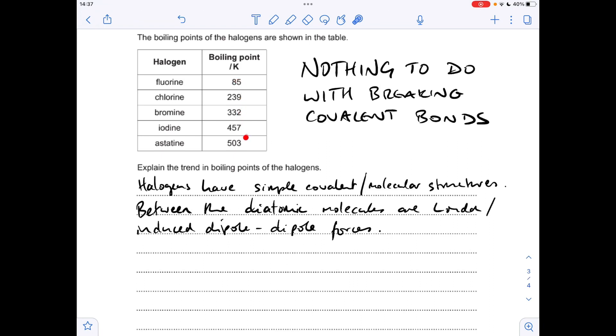So why is the boiling point going up as you go down the group? It's because you've got more electrons in your molecule, and therefore the London forces, or the induced dipole-dipole forces, are getting stronger.